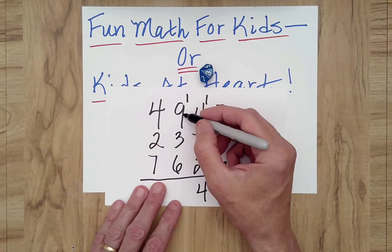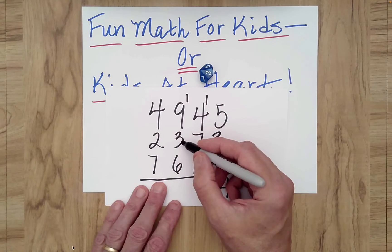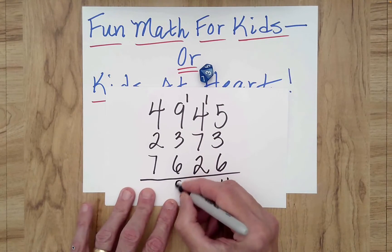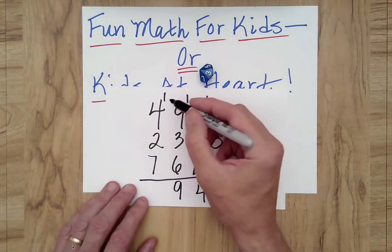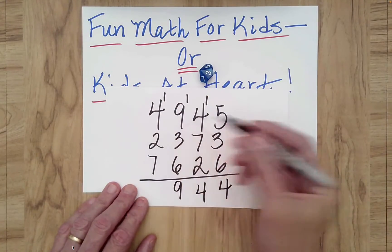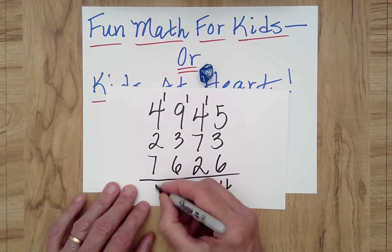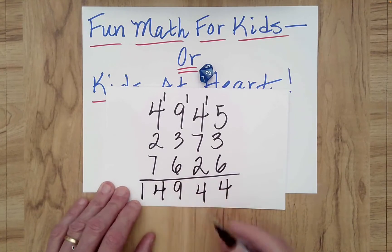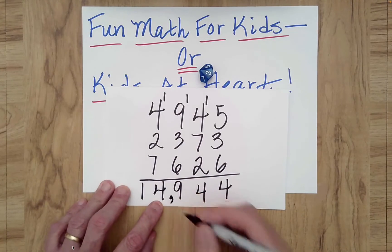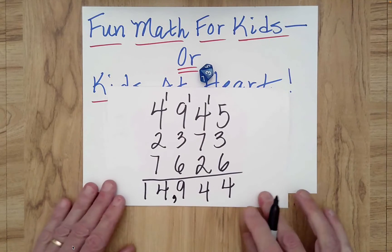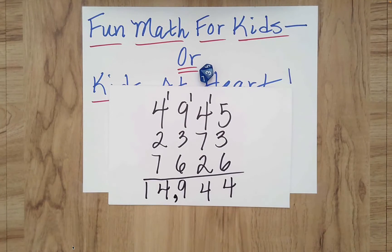One plus nine is ten, plus three is thirteen, plus six is nineteen. Carry the one. Let's see, one plus four is five, plus two is seven, plus seven is fourteen. So we got an answer, a grand total of fourteen thousand nine hundred and forty-four.